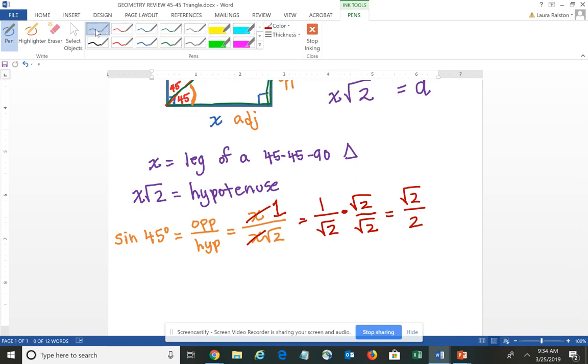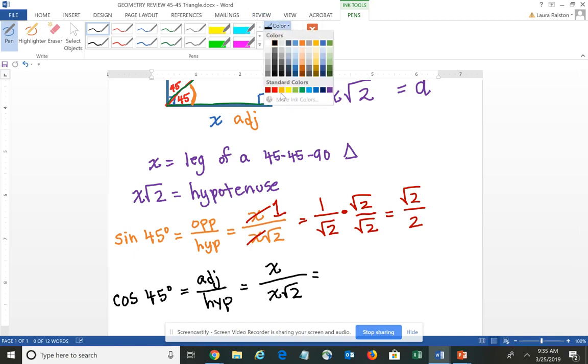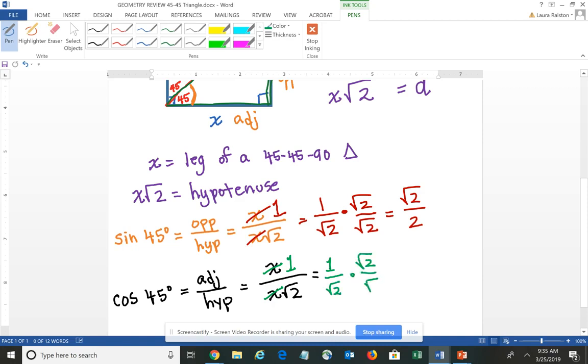If we think about the cosine of 45 degrees, which is adjacent over the hypotenuse, we would still have X over X over square root of 2. And again, if I go through that process of simplifying, I have an X in the numerator and an X in the denominator, placeholder of 1. So I have 1 over square root of 2, which is square root 2 times square root 2 to rationalize that denominator. You never leave a radical in the denominator. And again, we get square root 2 over 2. So the cosine of 45 degrees is also always going to be square root 2 over 2, again, regardless of the size of the triangle.